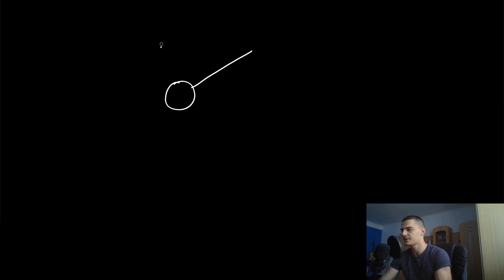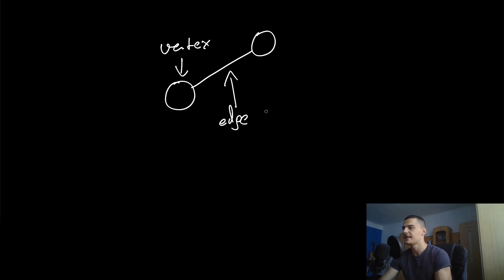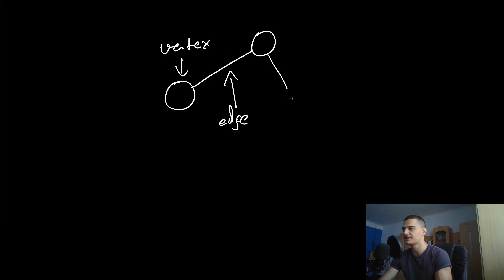A graph is essentially a data structure consisting of so-called vertices and edges. You have a vertex here, and this here is an edge. An edge typically connects two vertices. In a simple graph there is no such thing as an edge connecting a vertex to itself, so we have vertices connected by edges.